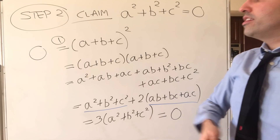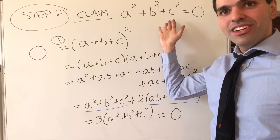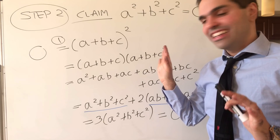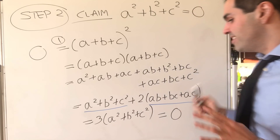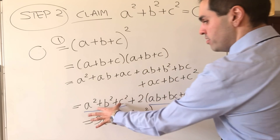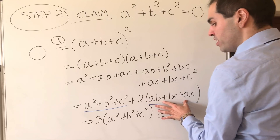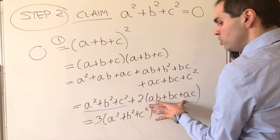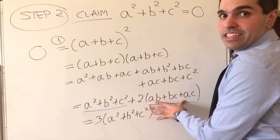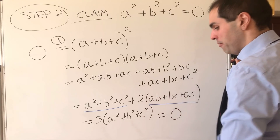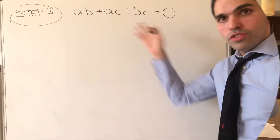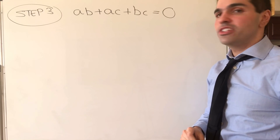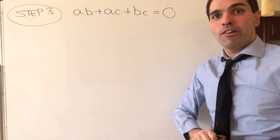So in other words, three times X is zero, which means X — the original expression — is also zero. Even though this is interesting, we will not directly use this identity. Instead, since those two expressions are equal and both are zero, we will use that AB plus BC plus AC is zero. Just a reminder: now we know that AB plus AC plus BC equals zero.